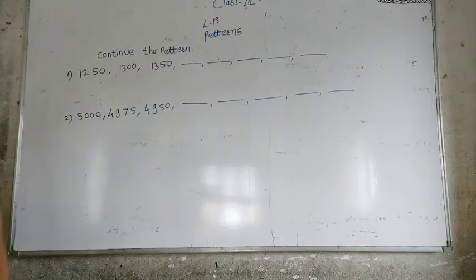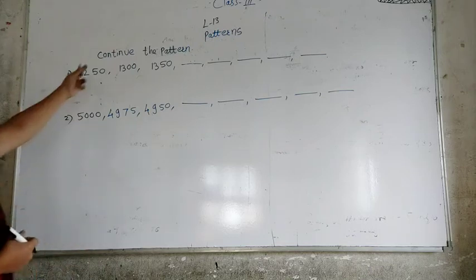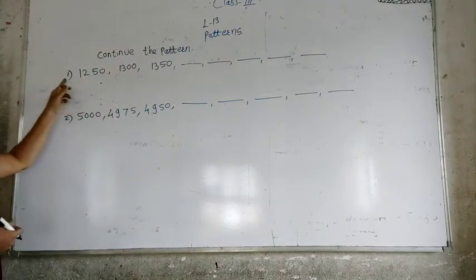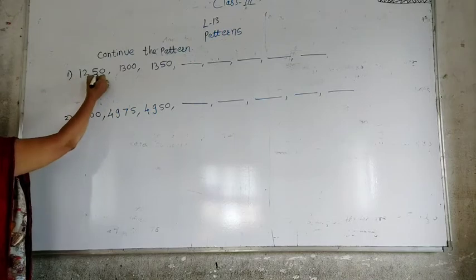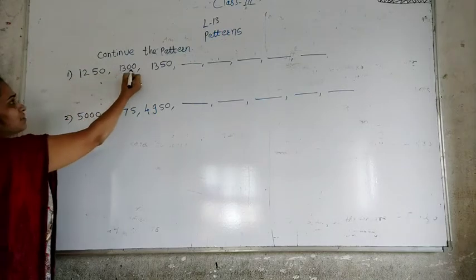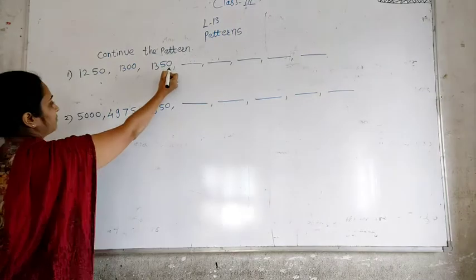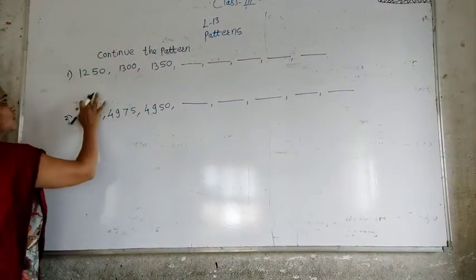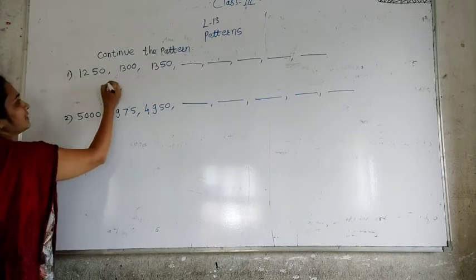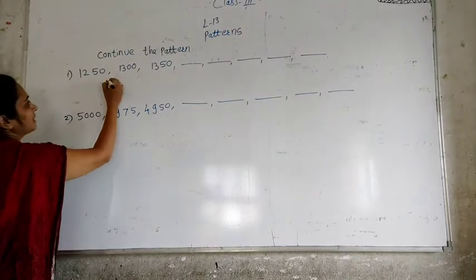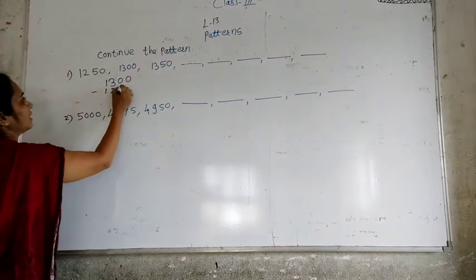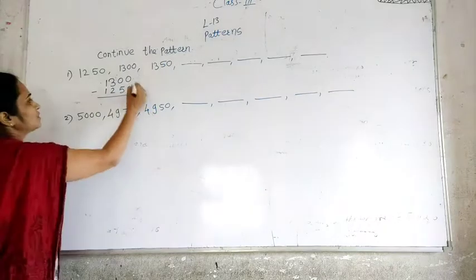Students, today I am also going to explain the exercise on page number 150. The question is: continue the pattern. Some number patterns are given. The first number pattern is 1250, then 1300, then 1350. We have to calculate the difference between the numbers, so I will subtract: 1300 minus 1250.